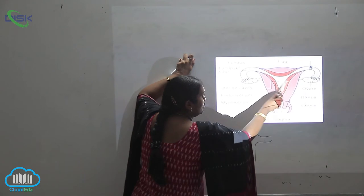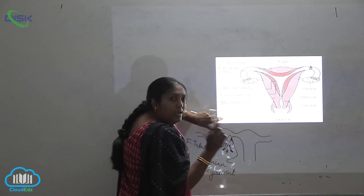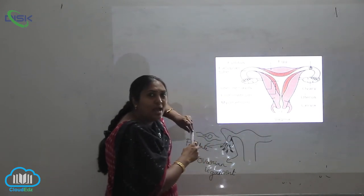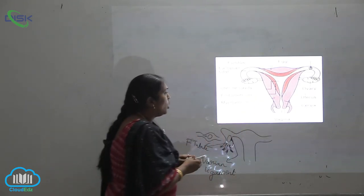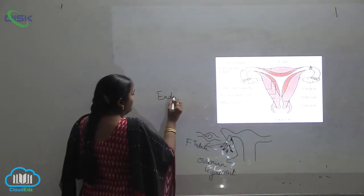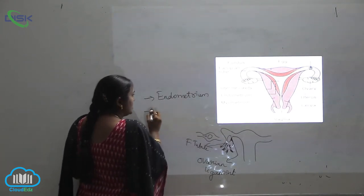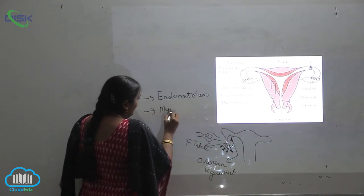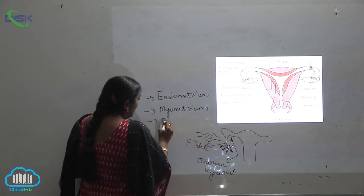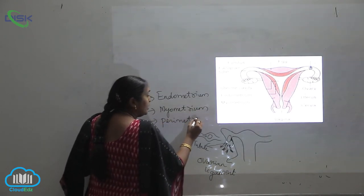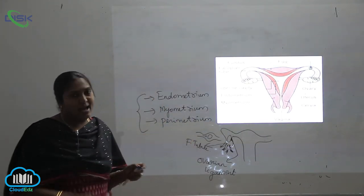This is the uterus. The uterus is this posterior region and it has 3 layers. The outermost is called the endometrium, the middle one is called the myometrium, and the innermost is the perimetrium. These are the 3 layers of the uterine cavity.